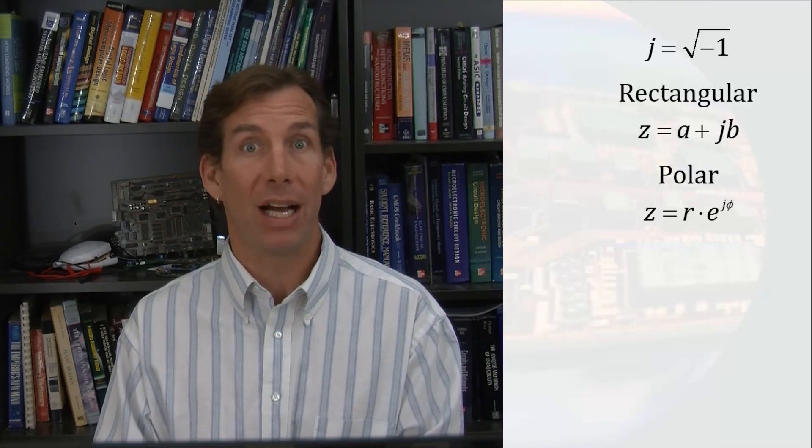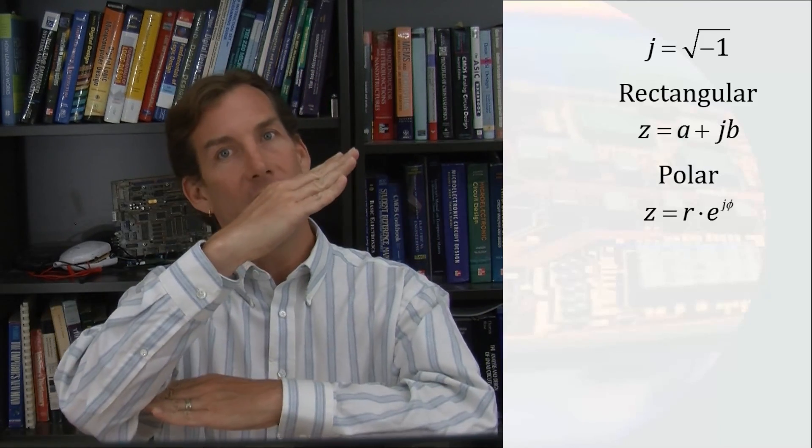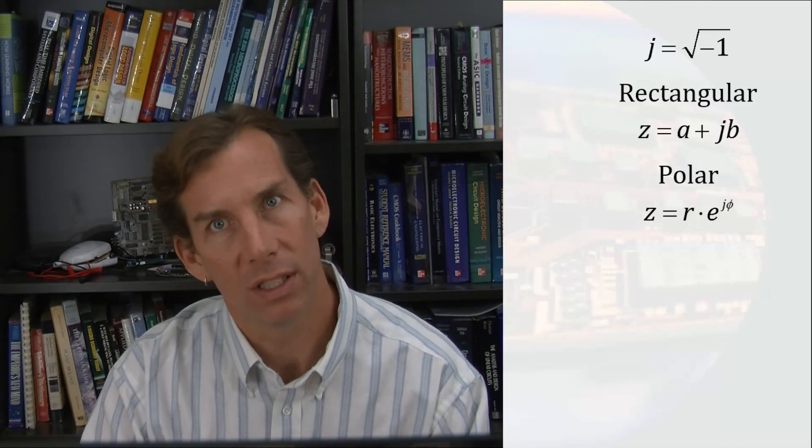The other representation is polar format, where we denote the number by its distance from the origin and the angle that a line to that point makes with the positive horizontal axis.